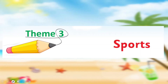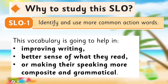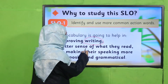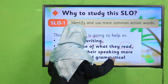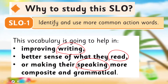Hamara raaj ka theme hai Sports, aur hamara SLO hai: identify and use more common action words. Is SLO ko study karne se bachche action words ki vocabulary increase karte hain, aur is vocabulary ko apni writing, reading, aur speaking mein use karte hain. Ye vocabulary bachcho ki overall language ko improve karti hai.